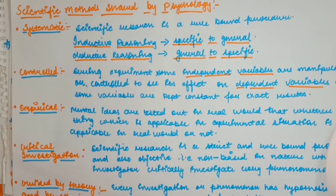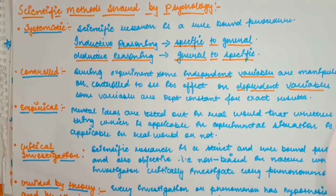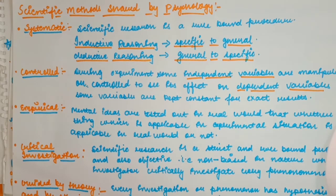The very first method is systematic. Systematic means we analyze our studies in a systematic and organized manner. Rule-bound procedure means we follow rules — how to do research, what do we need, what do we have to do. This is a kind of scientific research that follows a rule-bound procedure.